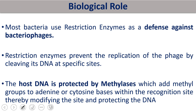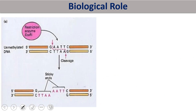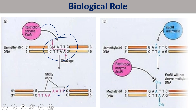The biological role of restriction enzymes: most bacteria use restriction enzymes as their defense system against bacteriophage. Restriction enzymes prevent the replication of the phage by cleaving its DNA at a specific site. The host DNA is protected by methylase enzymes — methylation on adenine and cytosine marks bacterial DNA. Unmethylated DNA will be digested by restriction enzymes. If the adenine is methylated, EcoRI will not cleave that methylated DNA, as it is treated as the bacterium's own DNA.